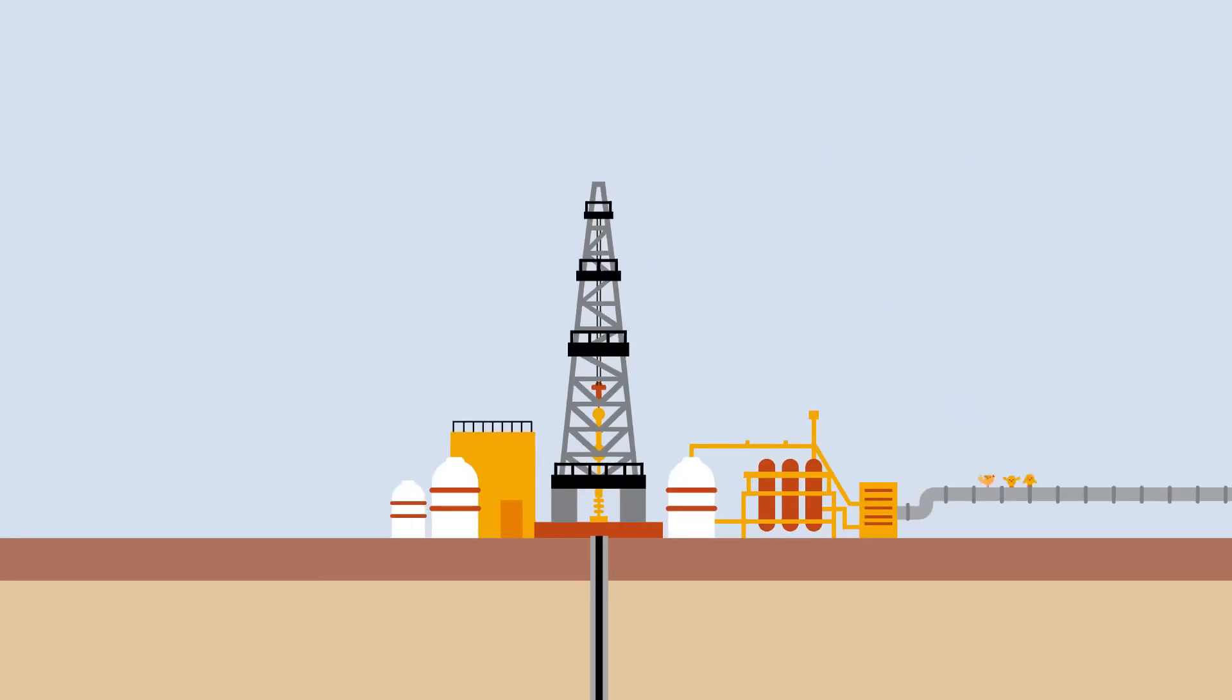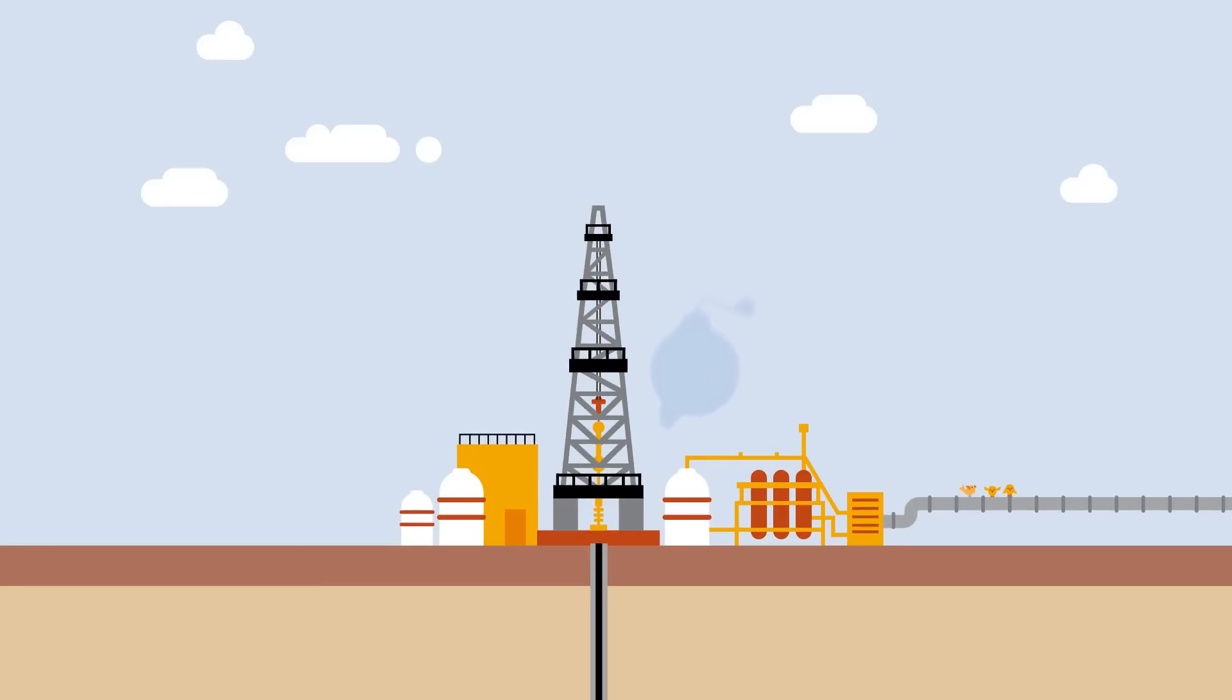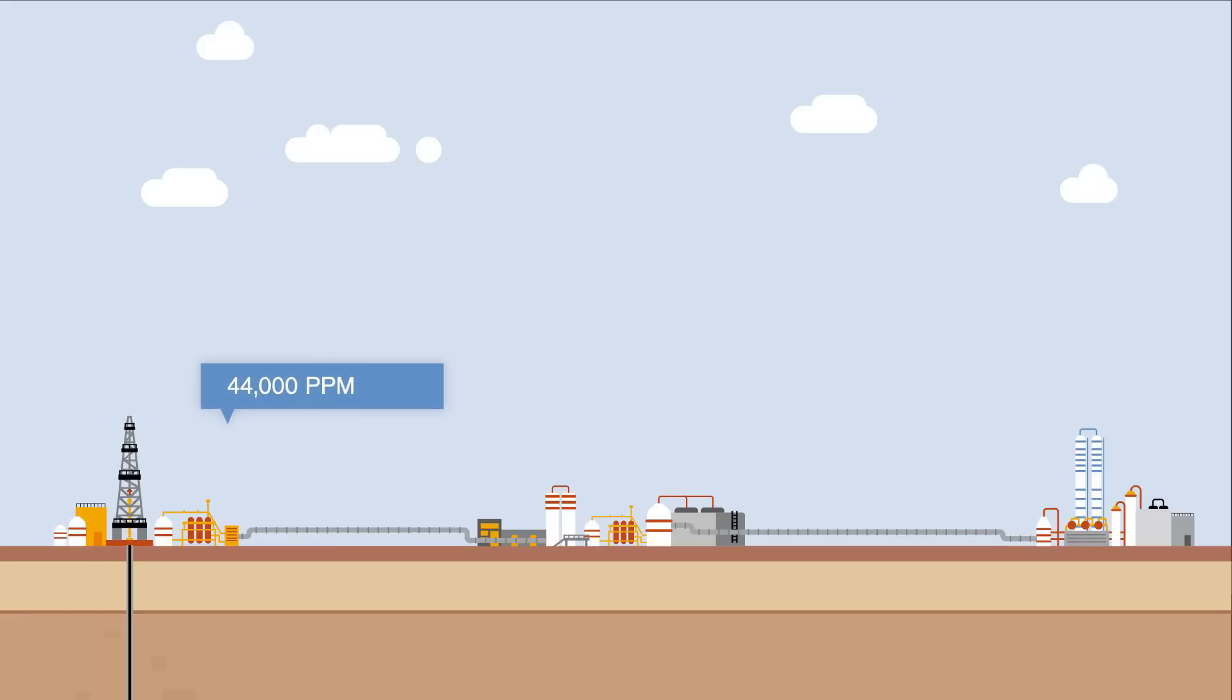If the concentration continues to rise, hydrogen sulfide becomes explosive, starting at a concentration of 44,000 ppm. Concentrations higher than 450,000 ppm can occur in acidic drilling fields.